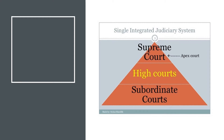In India, we have a single integrated Judiciary System. The Supreme Court is the highest of all courts and is called the Apex Court. Below it come the High Courts, and below them come the Subordinate Courts.